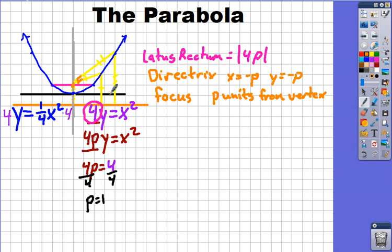The latus rectum goes through the focus from one endpoint on the parabola to another endpoint on the parabola, and its distance is 4p, that multiplier right there. So I hope this helps you out. In the next video I'll show you how to work with this and how to do translations and a thing called the degenerate conic.